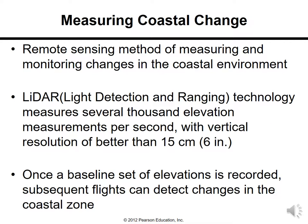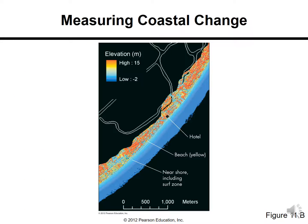Measuring coastal changes uses remote sensing methods. LIDAR — light detection and ranging technology — measures several thousand elevation measurements per second with a vertical resolution better than 15 centimeters. Once a baseline set of elevations is recorded, subsequent flights can detect changes in the coastal zone. In the LIDAR image, orange represents high elevation at 15 meters and the blue line represents approximately minus two meters depth.